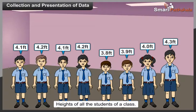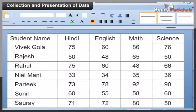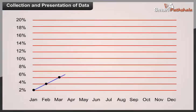Secondary data: when the person collects data from a source which already has information stored, it is known as secondary data. Example: collection of marks of all the students of a class taken from the school record. We can present the raw data in a format which makes it more understandable and readable.